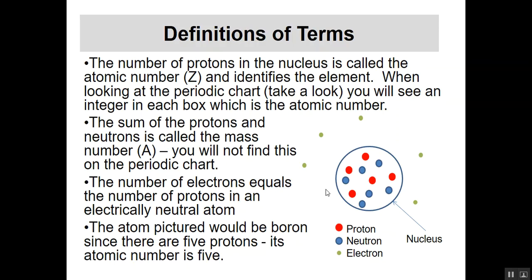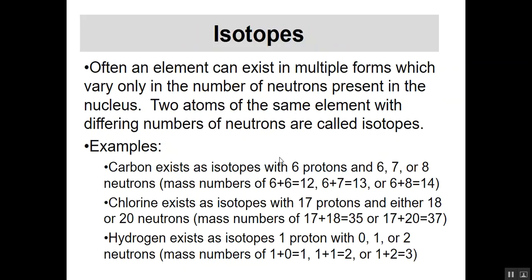When I have atoms of the same element that differ in the number of neutrons, we call them isotopes. Two atoms of the same element with differing numbers of neutrons are isotopes. For example, boron has five protons, and as long as I have five protons it's boron, but I might have five, six, or seven neutrons.